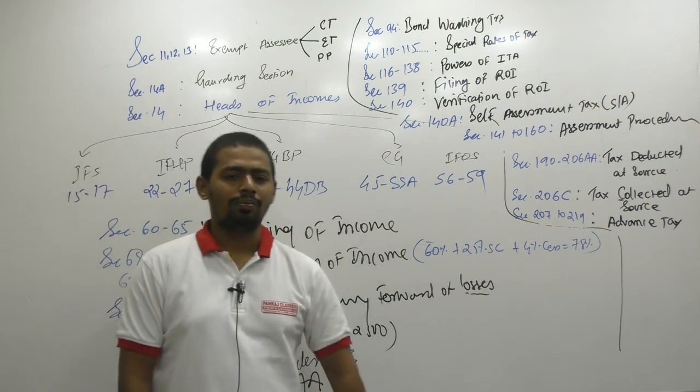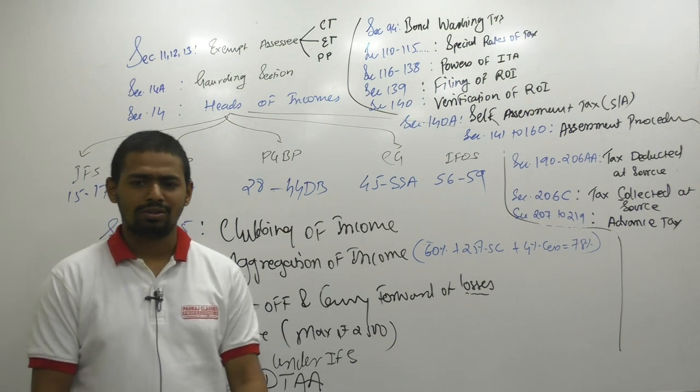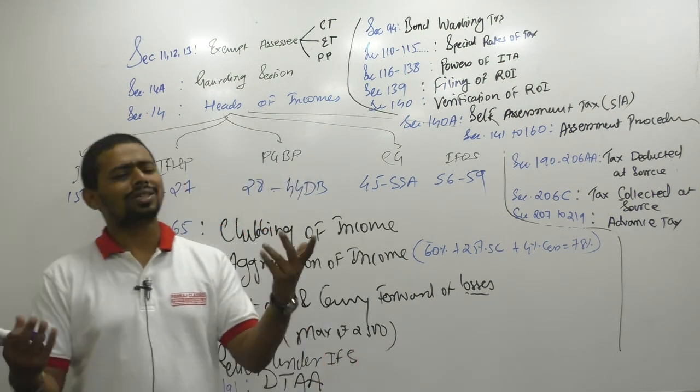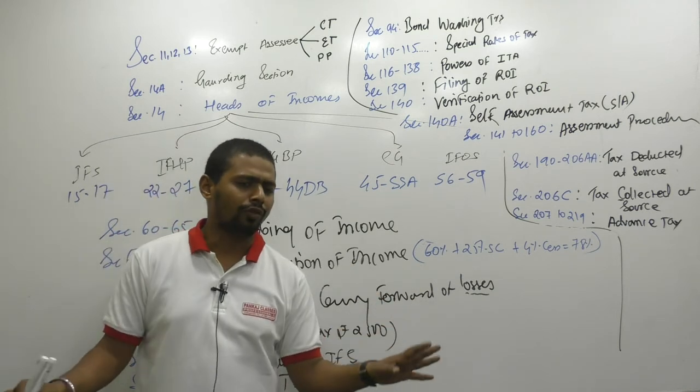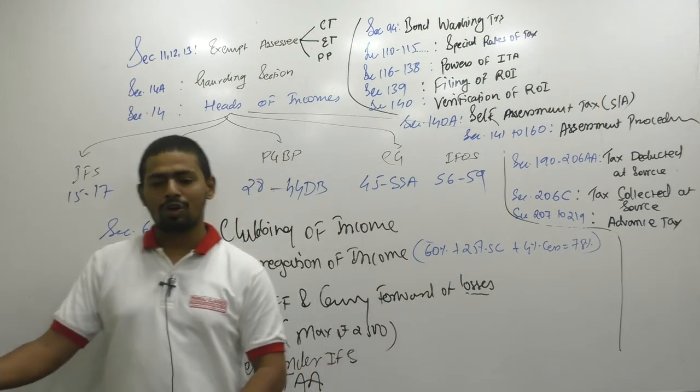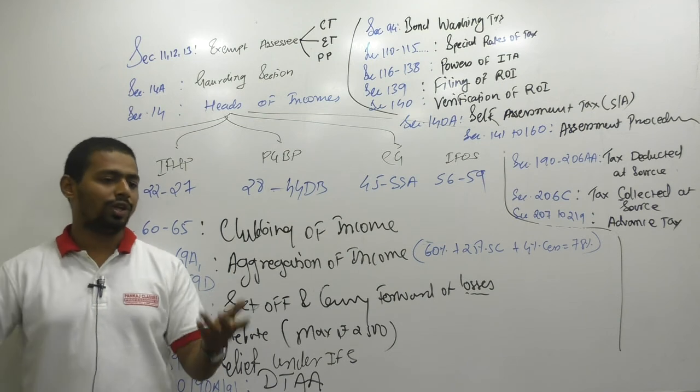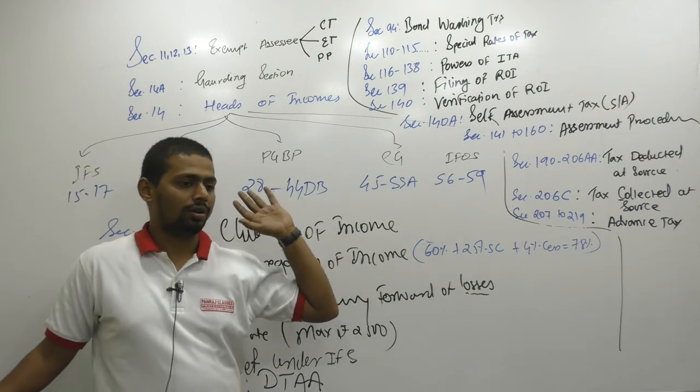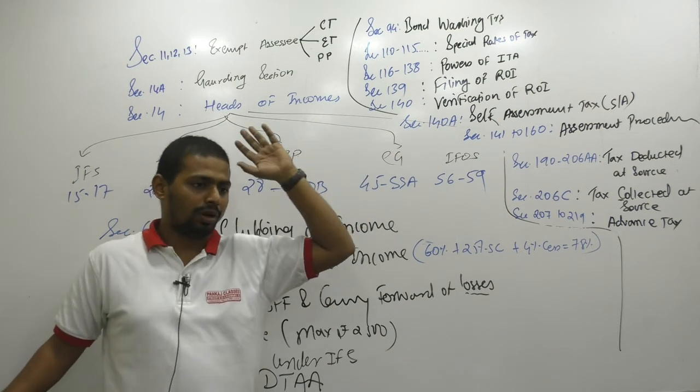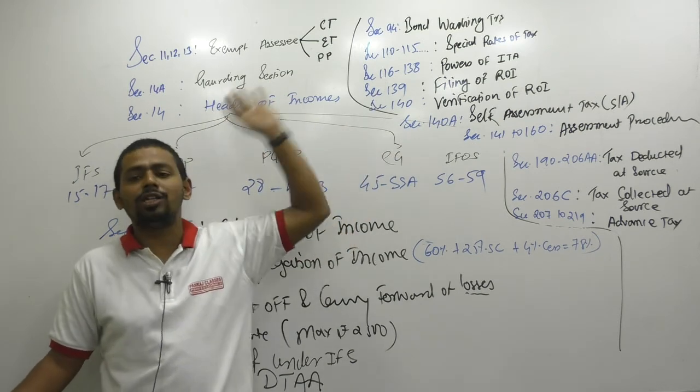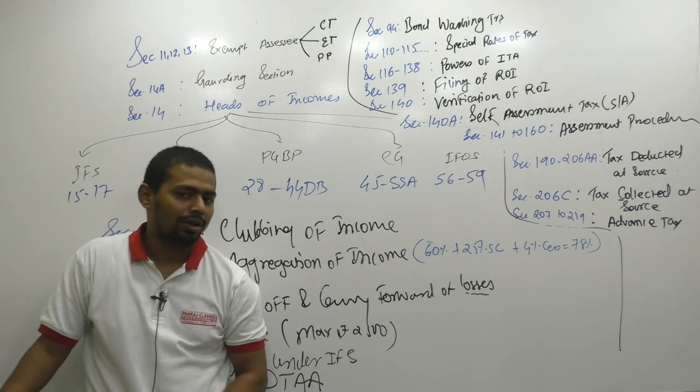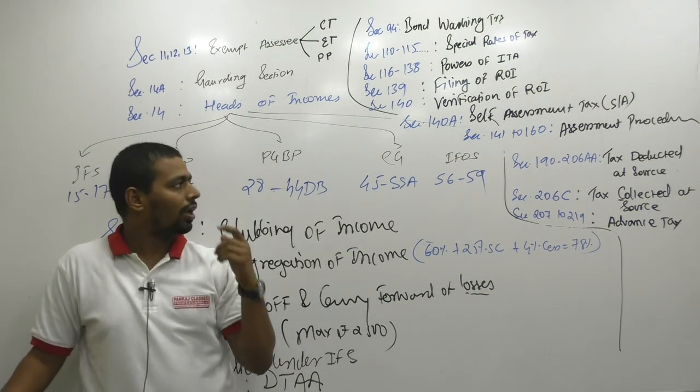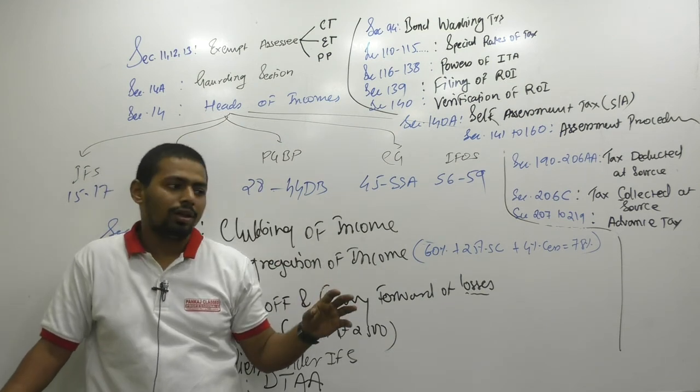Sir, tell us which chapters are not important. Nothing is important. If salary is not important, then PGBP is also not important. Then capital gain is also not important. Then you are also not important, because they will pass only important people. And for important people everything is important.